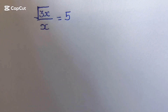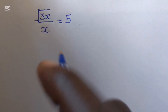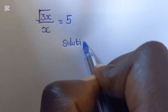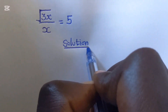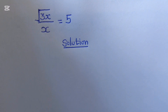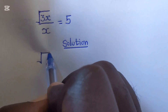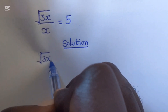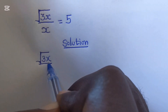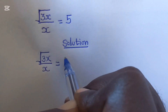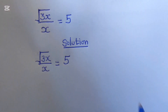Welcome to my channel. Let's provide a solution very quickly. We have the equation: square root of 3x over x, which equals 5.